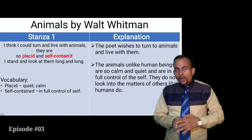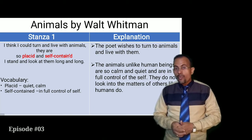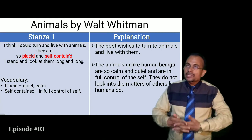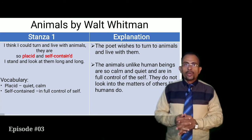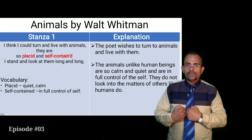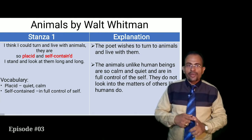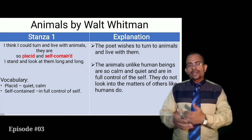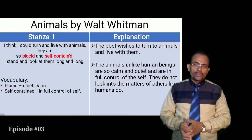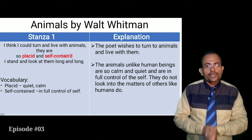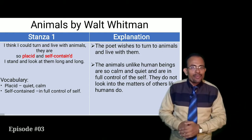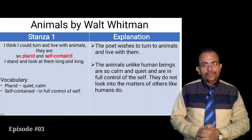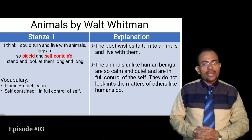The poet longs or wishes to become an animal, because animals are calm and quiet and self-contained — they do not look beyond themselves. They are busy with themselves only. Unlike human beings, they do not interfere in the matters of others. The poet wishes to turn to animals and live with them, as animals are in full control of the self.